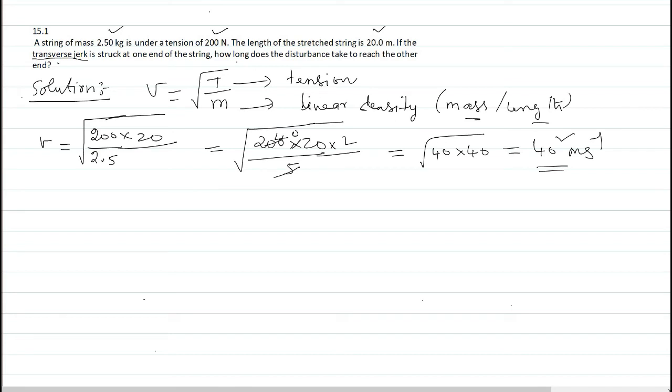Therefore, velocity of the transverse jerk is 40 meter per second. But velocity is not asked. What is asked is how long does the disturbance take to reach the other end? So, use the formula velocity is distance by time. Therefore, time is distance by velocity.